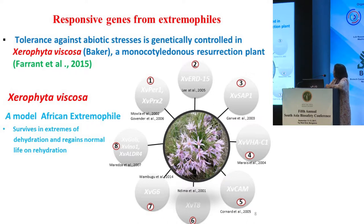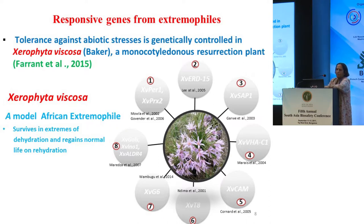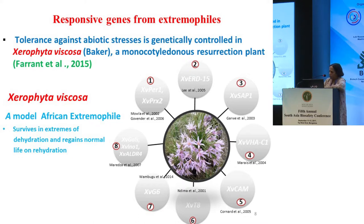You take the genes from the extremophile and incorporate them into another organism, and it has been shown that they can do their job. But as you can see, there are multiple genes involved in that, so it's not an easy job. As the previous speaker said, you're looking at the whole pathway, and all the genes involved would have to be modified in parallel.